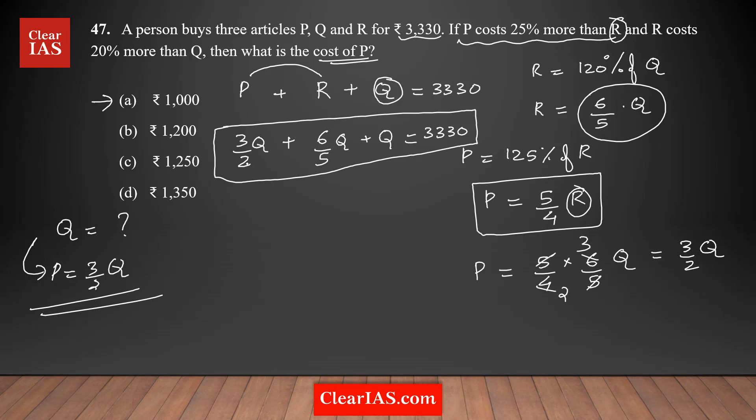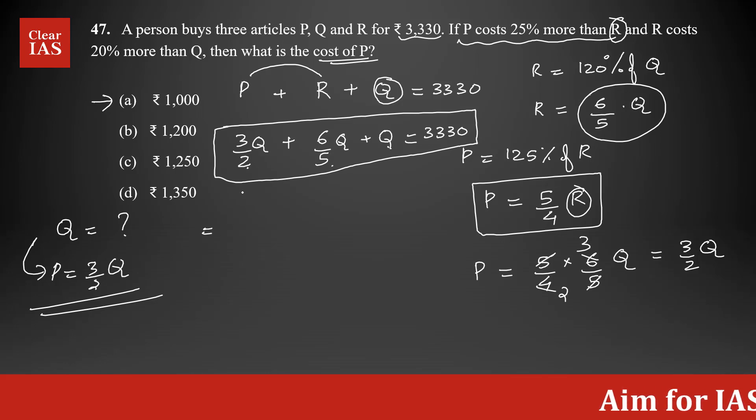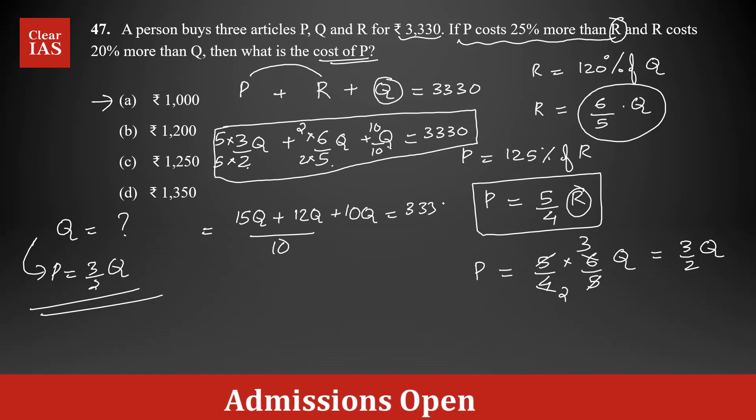I'm going to simplify further by taking the LCM. You have 2, 5, and 1—the lowest common multiple is 10. I'll bring all denominators in terms of 10. Here multiply by 5, so you have 15Q. Here multiply by 2, so it's 12Q. Here multiply by 10, so it's 10Q, which equals 3330.